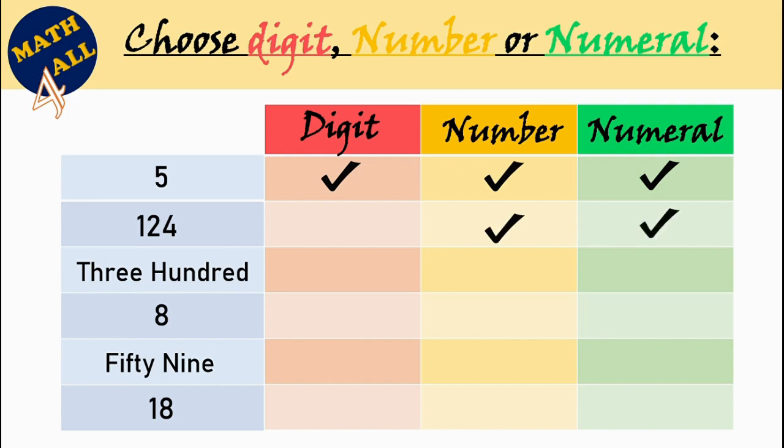The third example. Three hundred in letters. Is it a digit? No. Not a digit. Is it a number? It's written in letters, so it's not a number.